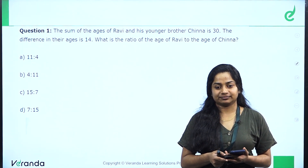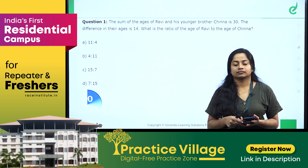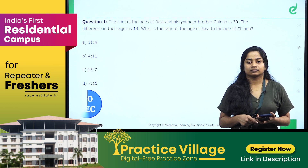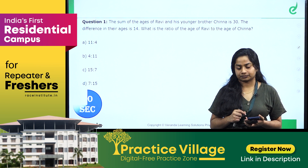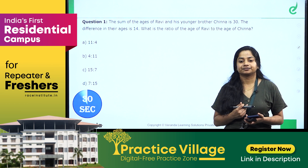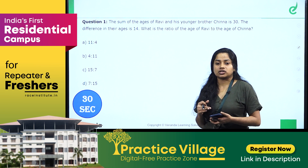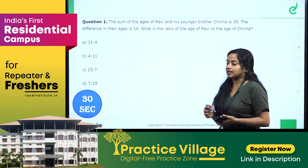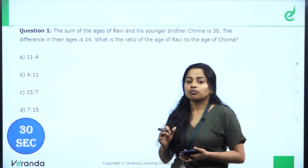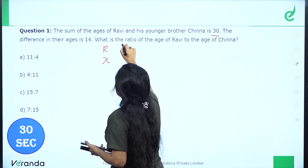Time is over, 30 seconds are complete. The sum of the ages of Ravi and his younger brother Shinya is 30. So, Ravi and Shinya's combined age is 30. We have to represent their ages by X and Y.